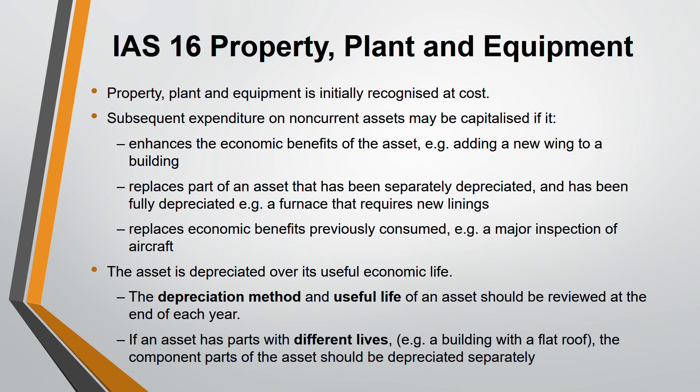If an asset has parts with different lives, each component part should be depreciated separately. For example, a building with a flat roof — the building will have a different life and the flat roof will have a different lifetime. So the building is depreciated separately and the flat roof is depreciated separately, because they have different useful lives. This type of question has come up in past papers.